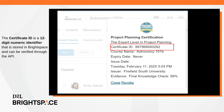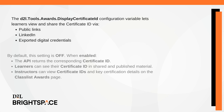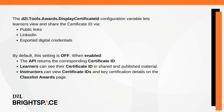The Certificate ID is a 12-digit numeric identifier that is stored in Brightspace and can be verified through the API. A new configuration variable, D2L.Tools.Awards.DisplayCertificateID, determines whether learners can view and share this ID through public links, LinkedIn, and exported digital credentials. By default, this setting is off.